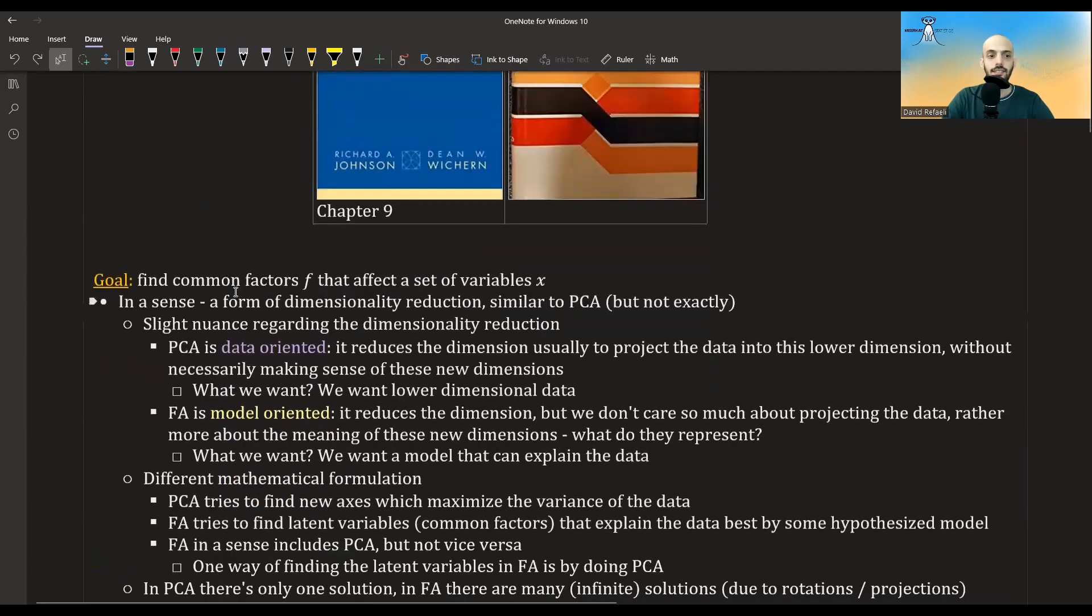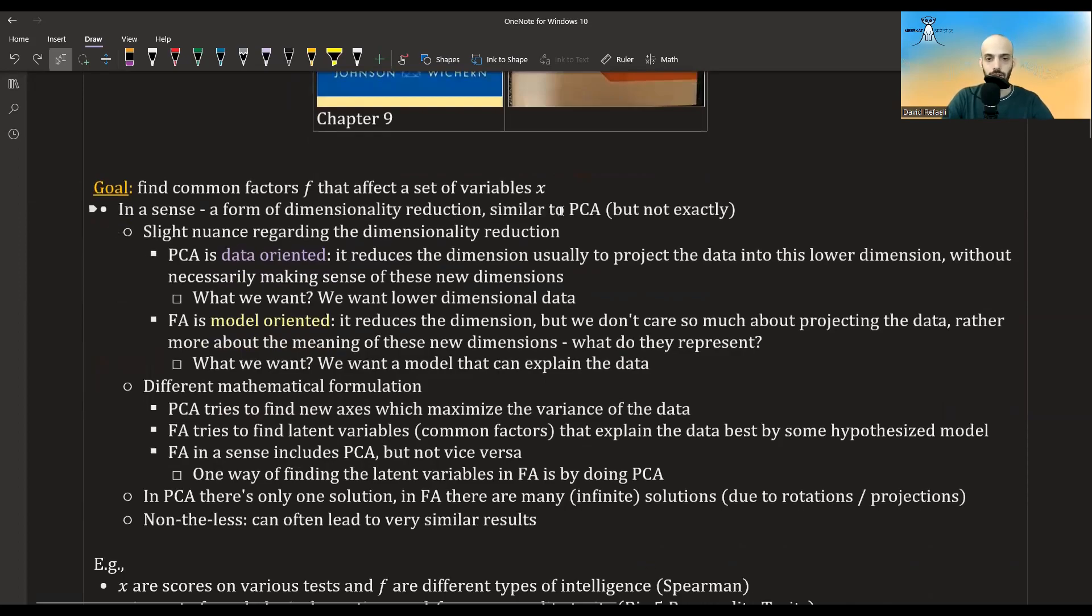So what is the goal of factor analysis? The goal is to find common factors denoted by f that affects a set of variables denoted by x. In a sense, it's a form of dimensionality reduction, very similar to PCA, but it's not exactly PCA. There is a slight nuance regarding the dimensionality reduction.